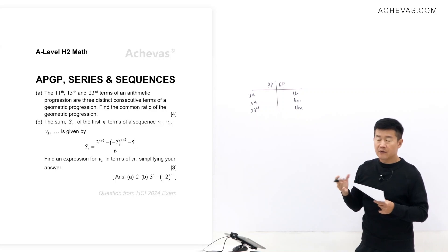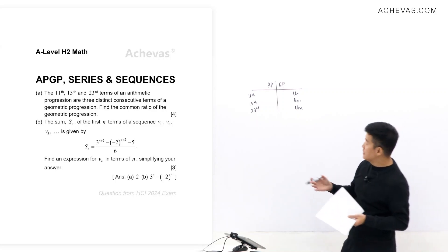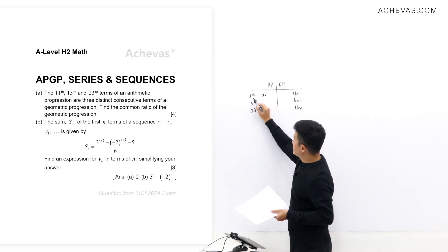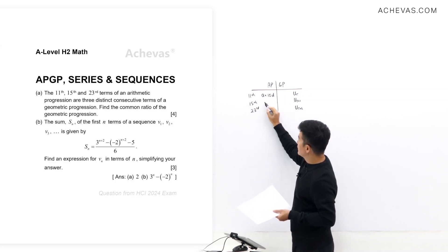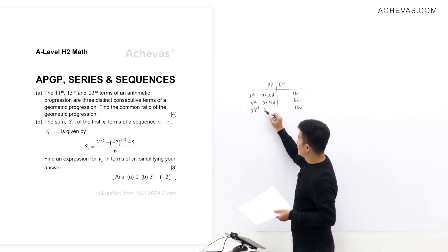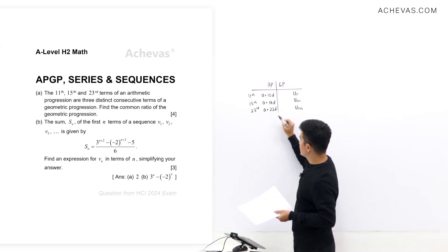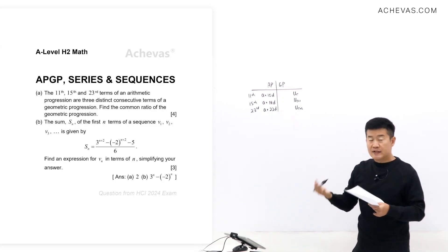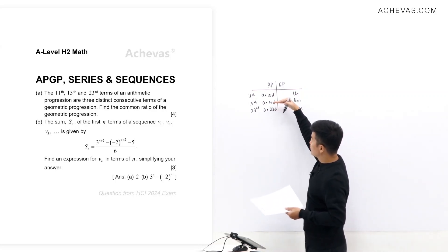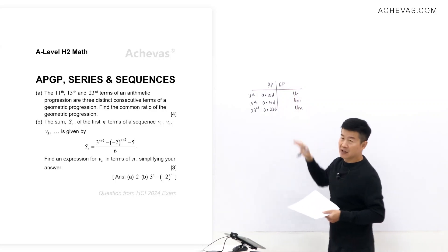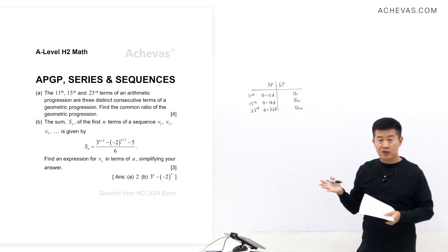Calling the first term of the AP 'a' and the common difference 'd', the 11th term will be a + 10d, the 15th term will be a + 14d, and the 23rd term will be a + 22d. Since they are consecutive terms of the GP, the ratio between successive terms must be constant — this divided by this equals this divided by this, giving us the common ratio.